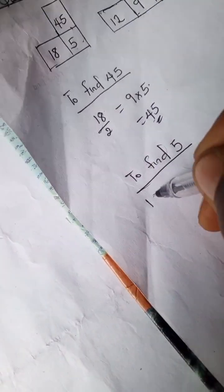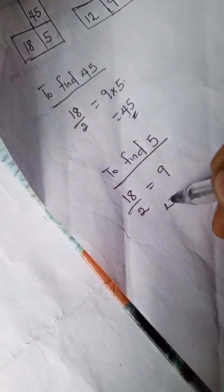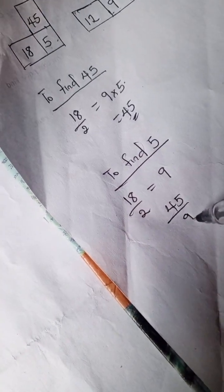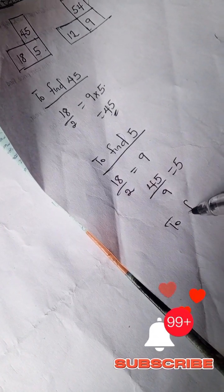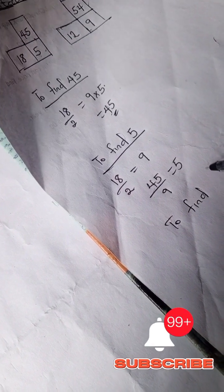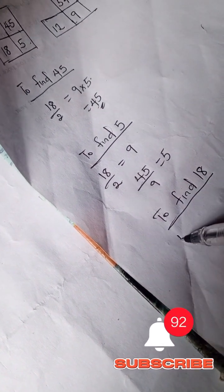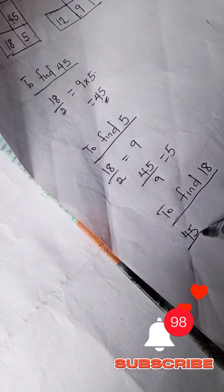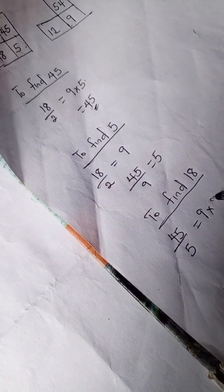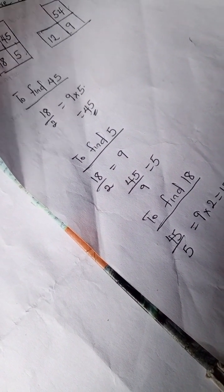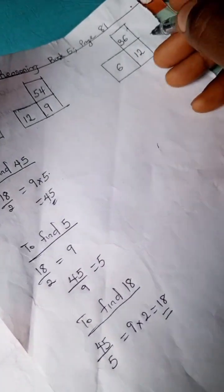45 divided by 9 is 5. To find the last number, to find 18, we have 45 divided by 5 is 9, 9 times 2 is 18. All right, so let's try if it's going to work.